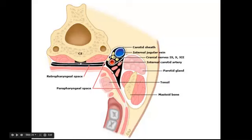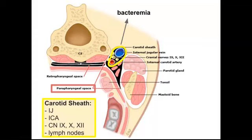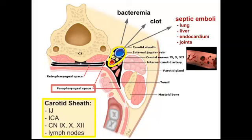Specifically, it involves the parapharyngeal space. You can see here are your tonsils, and just adjacent to that is the parapharyngeal space. In Lemierre's specifically, it penetrates the carotid sheath — and that's where things get scary. Inside there you have the IJ, the internal carotid, some cranial nerves, and also lymph nodes. That can easily lead to bacteremia, and you can also get clot formation caused by the exotoxins, which then results in septic emboli.